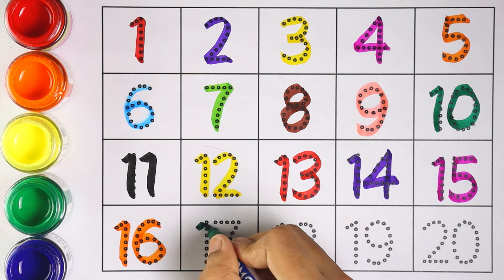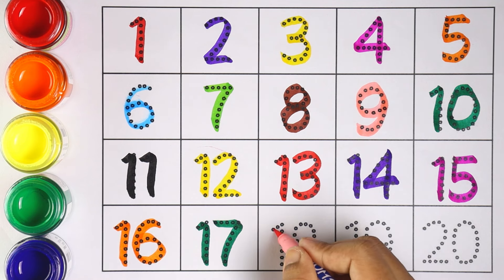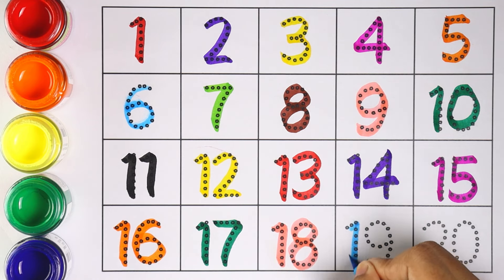Number 16. Number 17. 1 and 7 makes the number 17. Number 17. 1 and 8 makes the number 18. Number 18. Number 19. 1 and 9 makes the number 19.